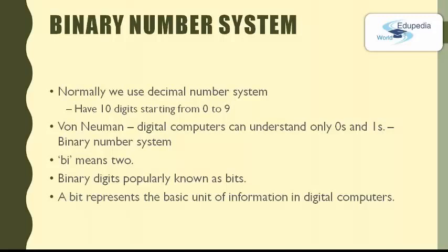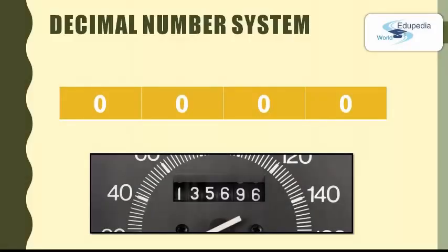Before moving on to binary number system, let's brief decimal number system. Consider that you are sitting in a car and the car is moving at high speed. Also assume that the initial reading of the milometer was 0000. Now as the car moves, the reading will be changing from 0 to 1, 1 to 2, 2 to 3, 3 to 4 and so on.